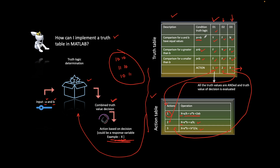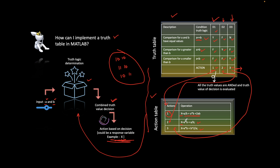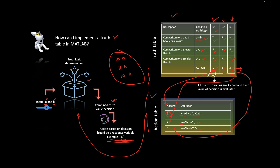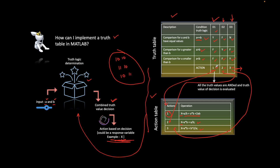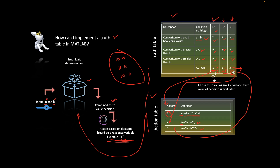The truth table works in two parts: first, checking the truth value of the conditions; then, taking the corresponding decisions. Based on those decisions, corresponding actions are planned in the action table. For every decision you must have an action in the Stateflow truth table, otherwise an error will pop up. Also, you can include multiple actions in the action columns.